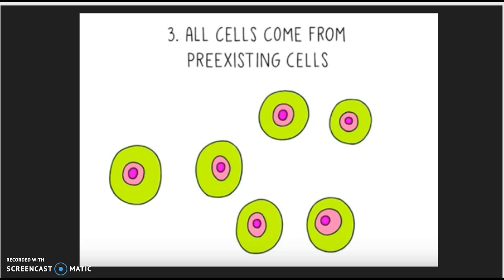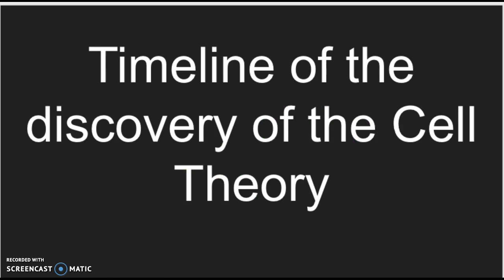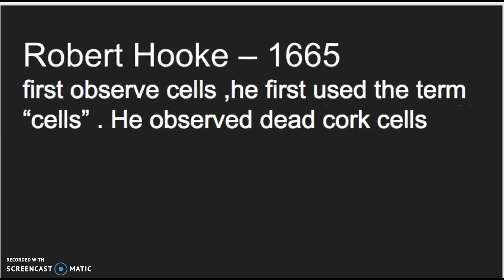We're going to talk about some important people that played a role in discovering the cell theory. The first person is Robert Hooke. In 1665, he was the first to observe cells. He used the term 'cells' and observed dead cork cells.